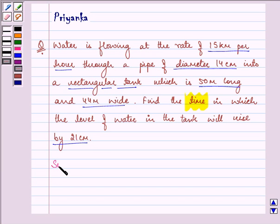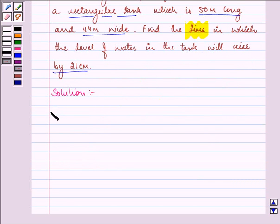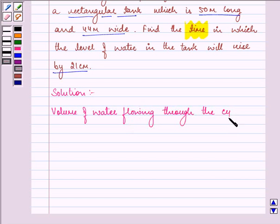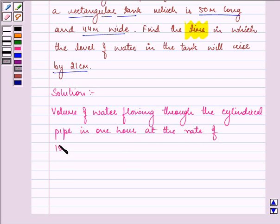So let us proceed with the solution to this question. First of all we will find out volume of water flowing through the cylindrical pipe in 1 hour at the rate of 15 km that is 15,000 meter per hour.